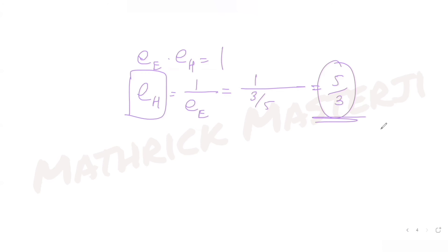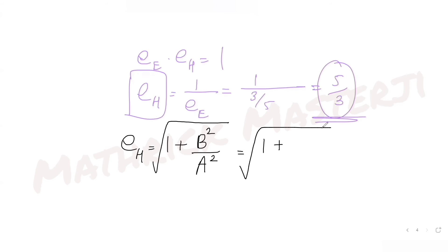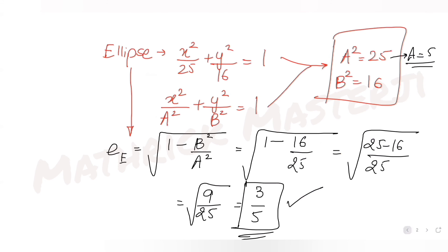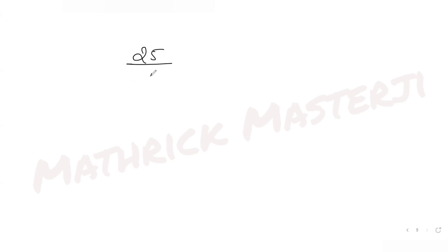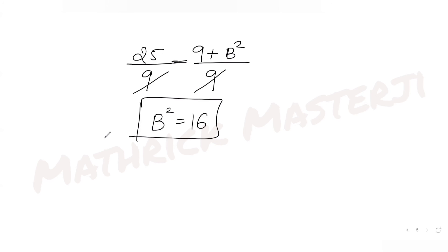Using the formula for eccentricity of a hyperbola: e₂ = √(1 + b²/a²). Squaring both sides with e₂ = 5/3 and a² = 9: 25/9 = 1 + b²/9, so b² = 25 − 9 = 16.